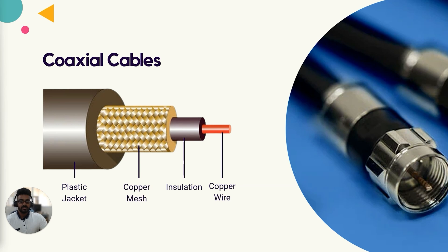Coaxial network cabling is made up of four different components. At the center is the inner conductor, typically made of a solid wire coated in either copper or silver. Transmissions on the network travel along this inner wire as electrical signals. To protect the transmissions and prevent grounding, the wire is surrounded by an insulator usually made of flexible PVC. Around the insulator is a metallic shield, typically aluminum mesh, used for grounding. The entire assembly is then coated with a plastic jacket. This is a generalization — there are several ways a coaxial cable can be made.